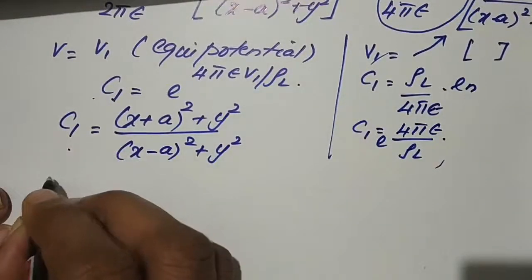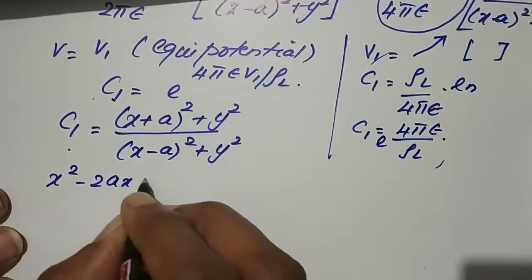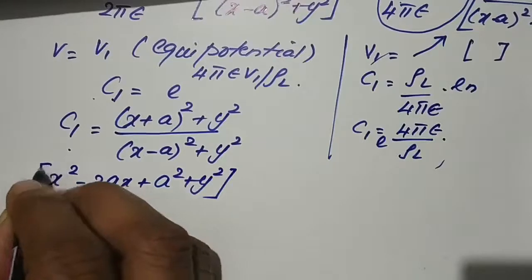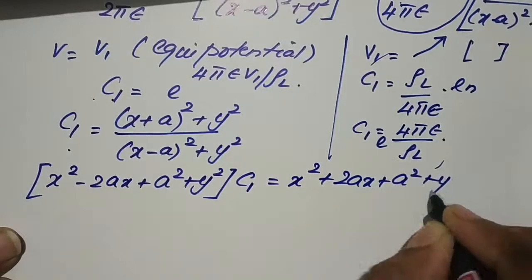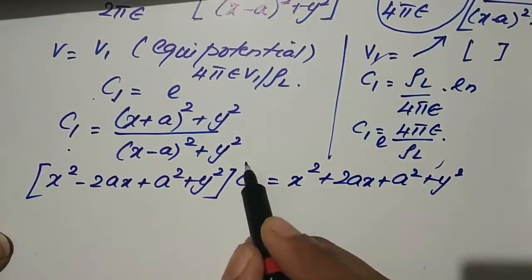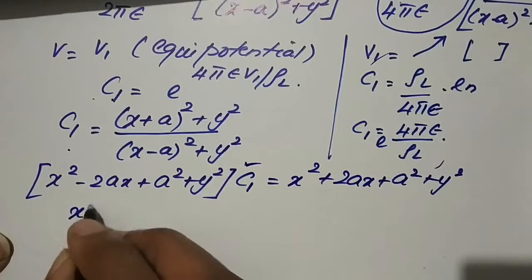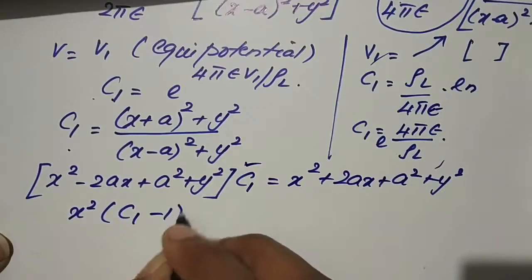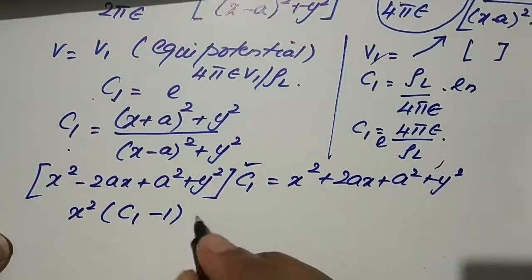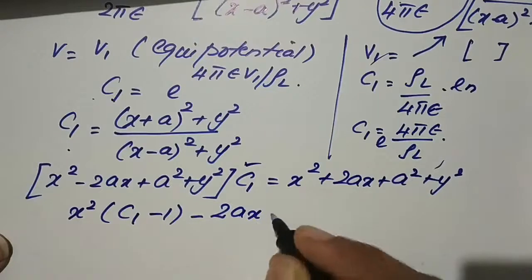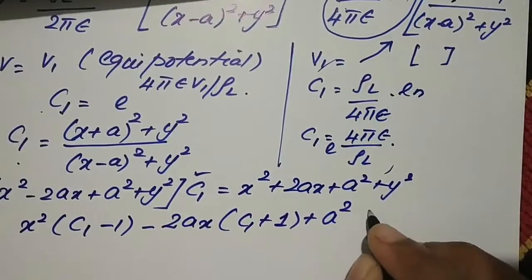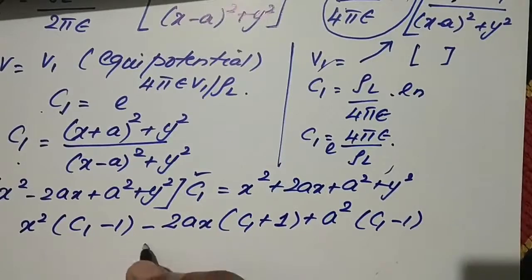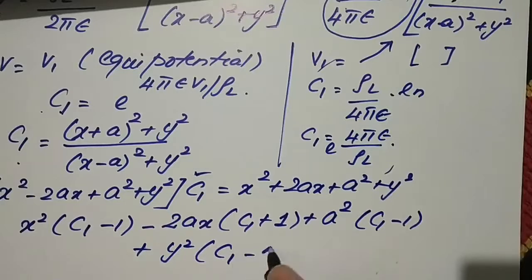Cross-multiplying C1 into the denominator: C1·[(x−a)² + y²] = (x+a)² + y². Expanding: C1·(x² − 2ax + a² + y²) = x² + 2ax + a² + y². Collecting terms: x²(C1−1) − 2ax(C1+1) + a²(C1−1) + y²(C1−1) = 0.